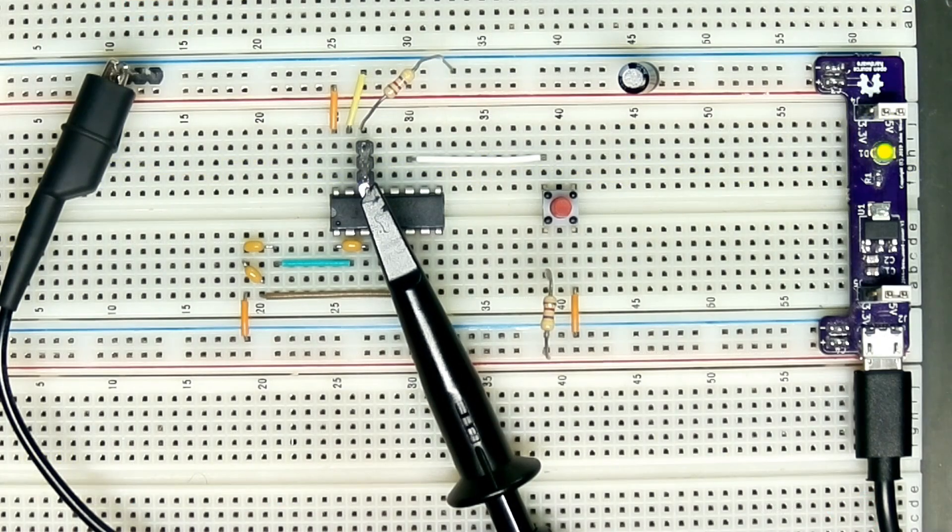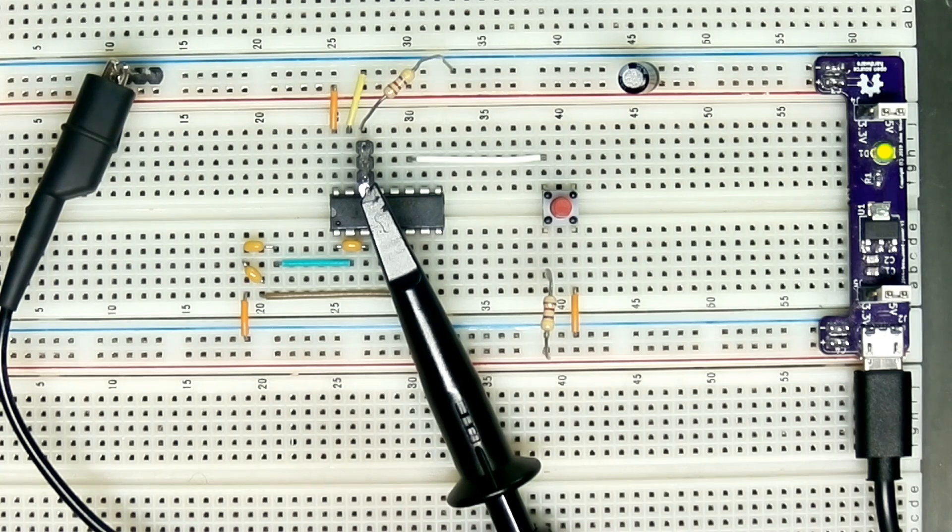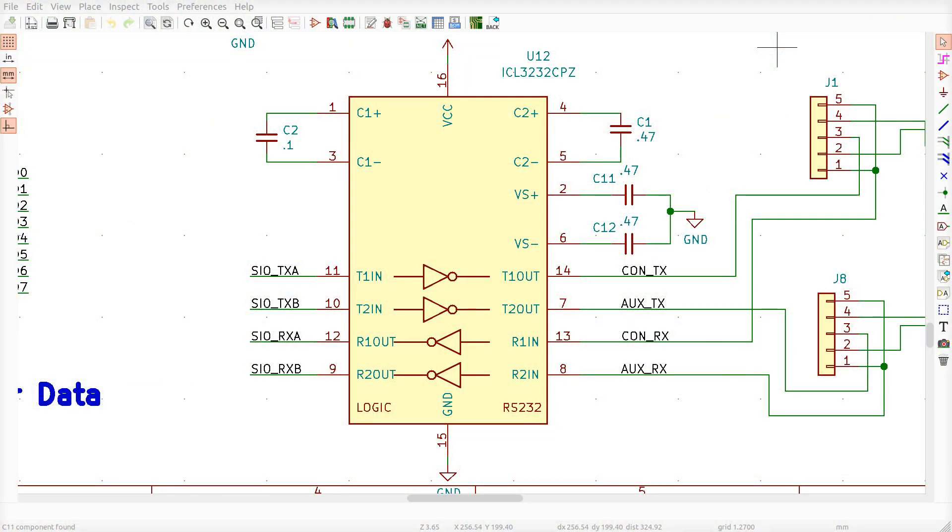Will I do this again? No, I will definitely use the 0.47, the recommended values rather than the 0.1s when I'm operating at five volts. So if I make another retro board, I'll definitely upgrade the caps. I'm not going to de-solder them from my existing board. That would just be a little bit messy and annoying. If you're having serial problems, maybe you'll look into this as a potential source of issues that could cause your problems.